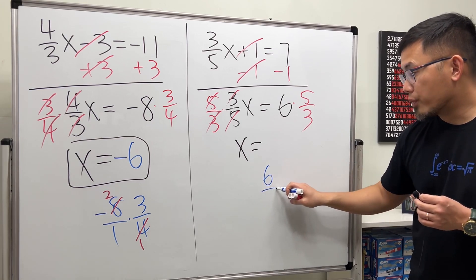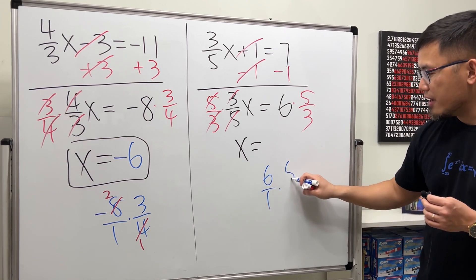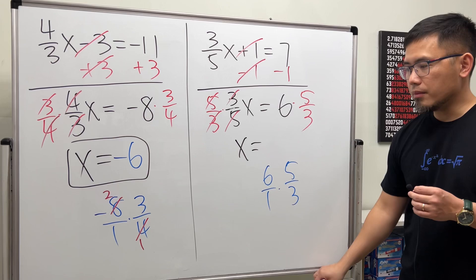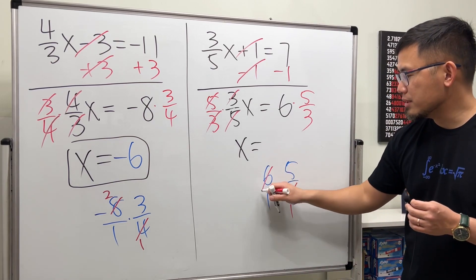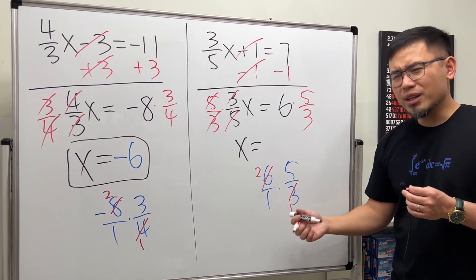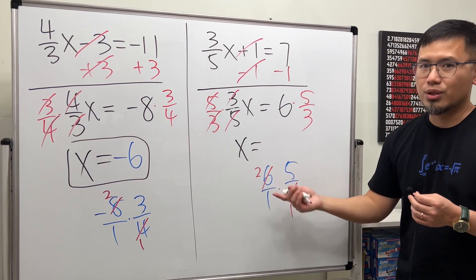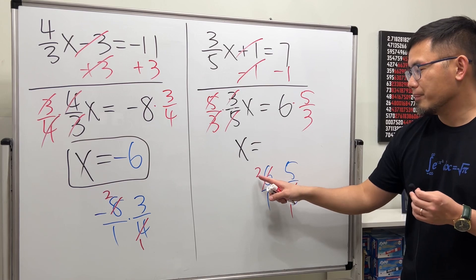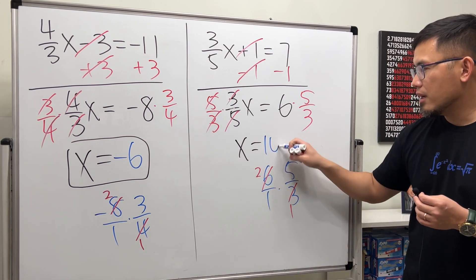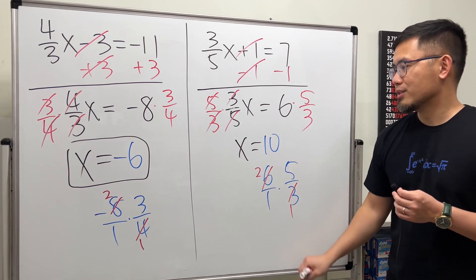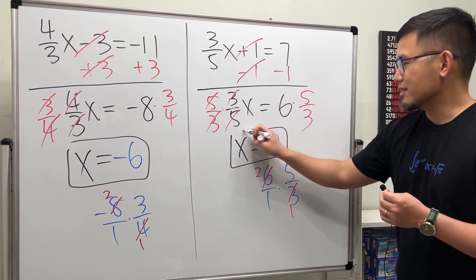For this, we have 6/1 times 5/3. Cross reduce: 3 goes into 3 one time, 3 goes into 6 two times. We can just do 6 divided by 3, you get 2. Finally, 2 times 5 is 10, and over 1 doesn't matter. So the answer is x equals 10.